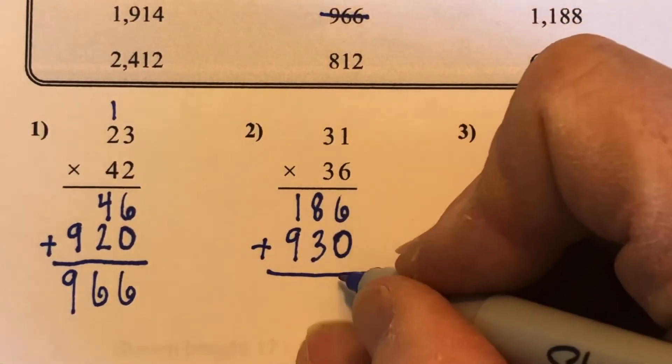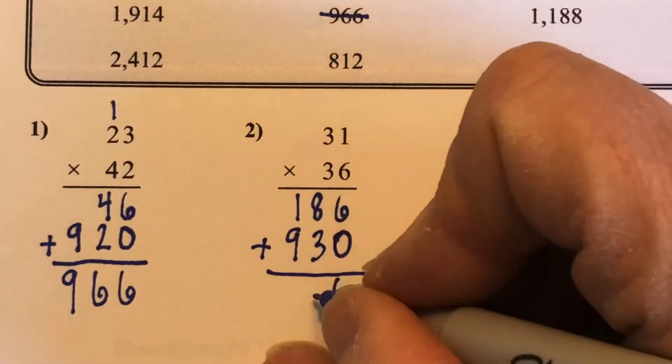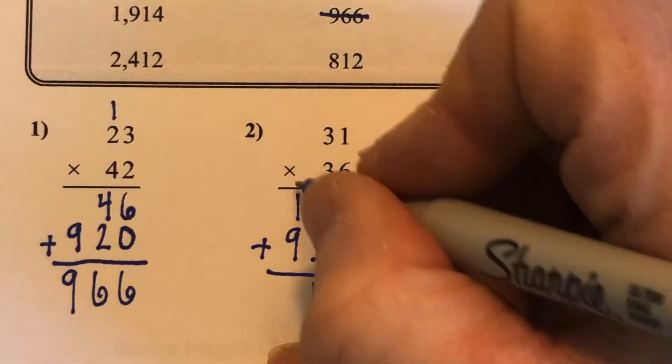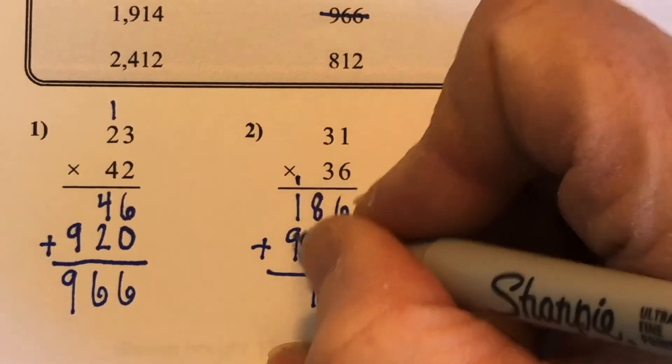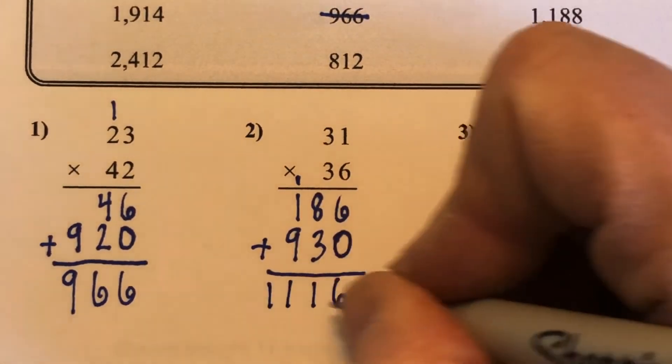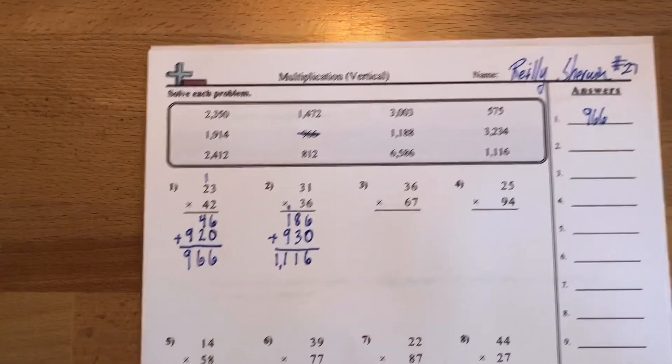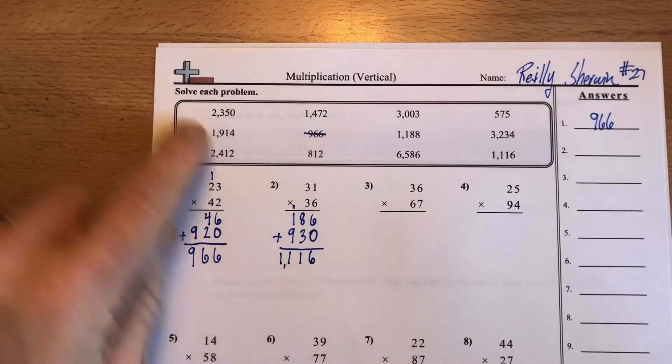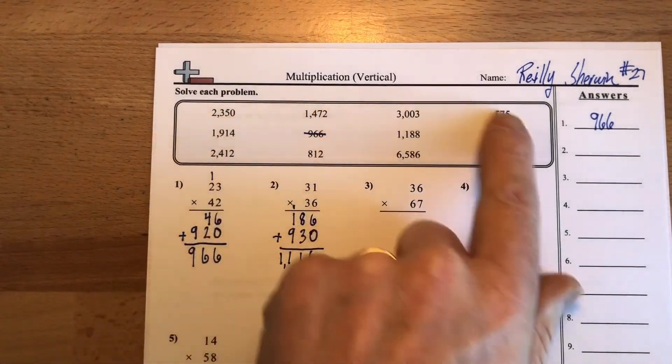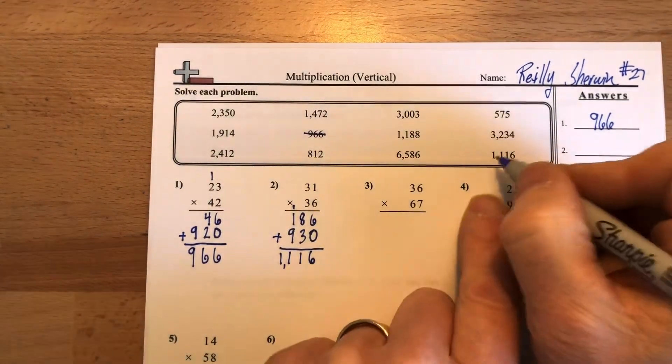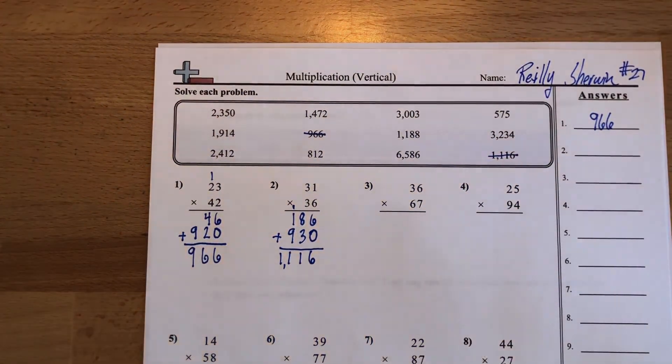Add them up. 6 plus 0 is 6. 8 plus 3 is 11. Carry the 1. 1 plus 9 is 10. Plus 1 is 11. So it's 1,116. Let's zoom out and see if we can find that answer up here. 1,116 sticks right out to me. There it is. I'm confident my answer is correct.